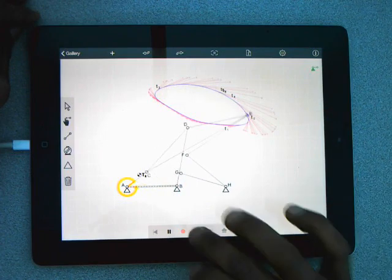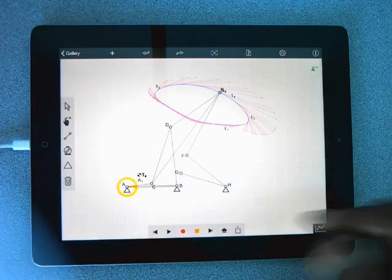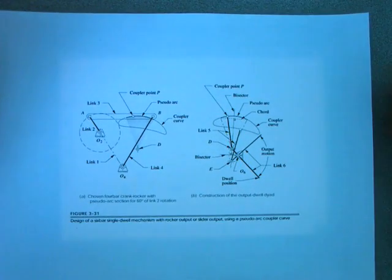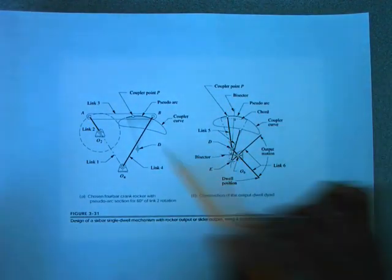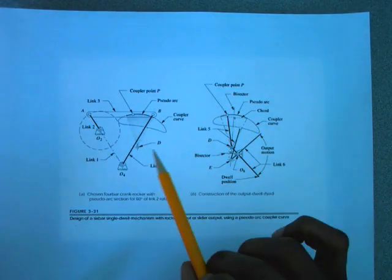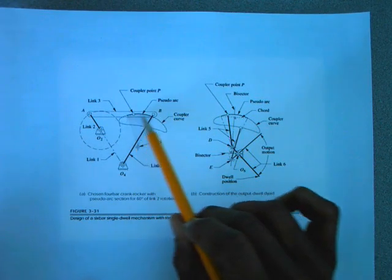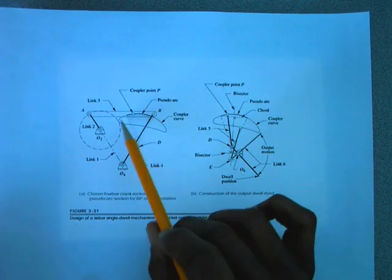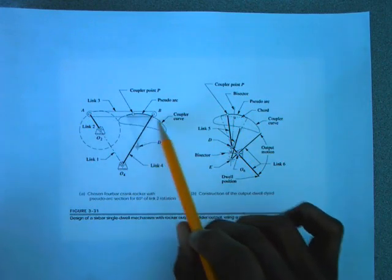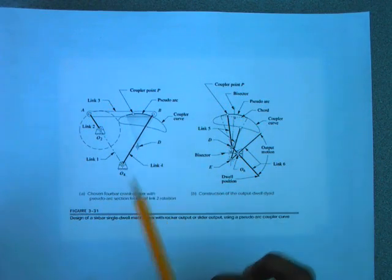What I want to talk about is how to go about creating this design. Now in the textbook, they show this figure as an example of creating such a single dwell. They first start with this linkage. This linkage is one in which the coupler curve has an arc in it. This arc is very important because the dwell happens at the center of a circle that comes in contact with that arc.